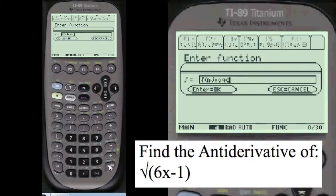Close off the parentheses. Ooh. Didn't press alpha, I guess. 6 times x minus 1. That's better.